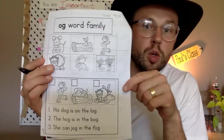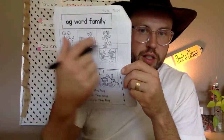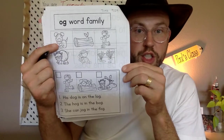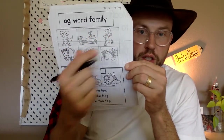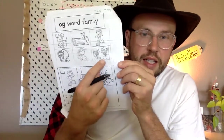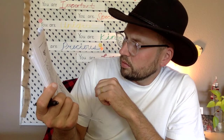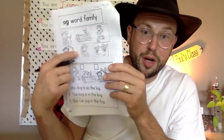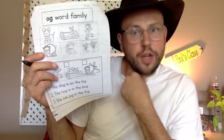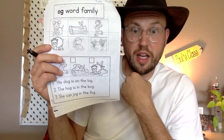Now turn to the OG word family. All these pictures are words that end with the sound -og: dog, log, jog, hog — what's this one? Fog. And frog? No — bog! That's a bog. I almost said pond, but it doesn't end with -og. It's a bog, so there you have it — you learned a new word!